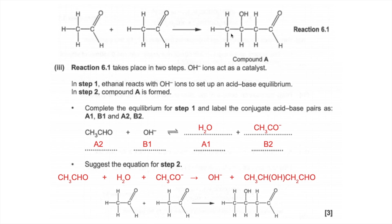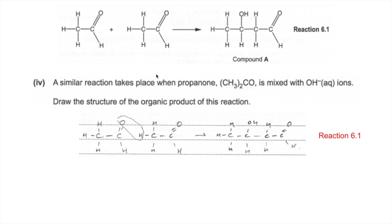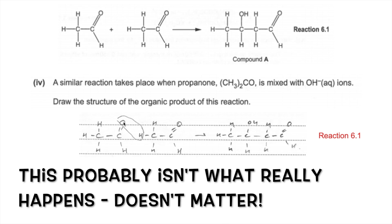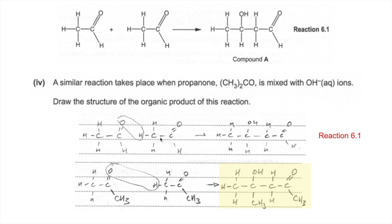For part 4 we do a similar thing but using propanone instead of ethanal. Looking back at reaction 6.1, the OH group was formed by the O on one aldehyde and the H on the other, then everything joined together. Doing the same with propanone gives us the corresponding product.